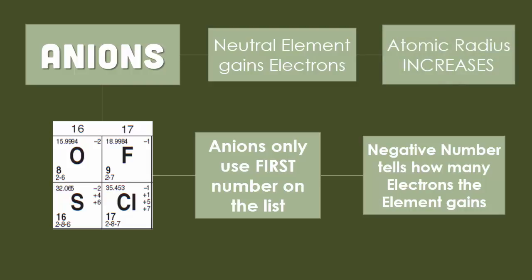So the atomic radius is going to increase because there's more negative electrons in one location and they're going to actually repel away from each other. Thus their radius gets bigger because of the repelling factor.